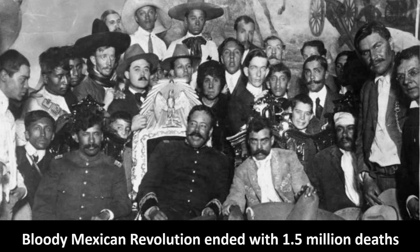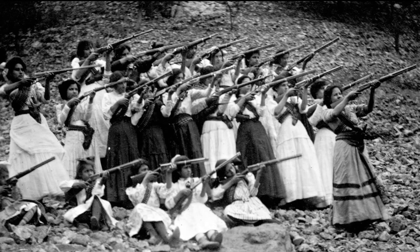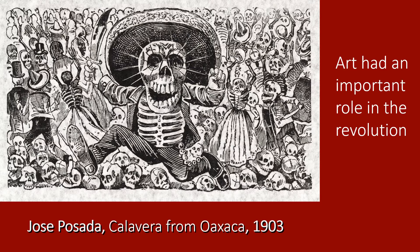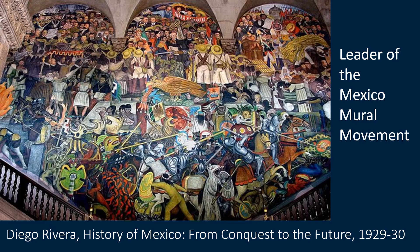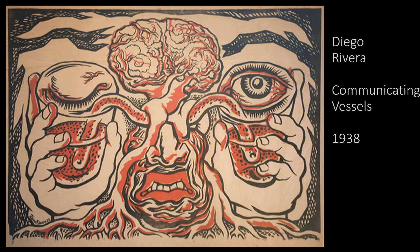Before going further, here's some background information. In the 1920s, the bloody Mexican Revolution had just ended with 1.5 million deaths. The revolution involved a peasant uprising and the new government had socialist ideals. Art had an important role in the revolution — the government wanted to use murals to communicate a socialist message. They contacted artists like Rivera to paint murals, and he eventually became the leader of the Mexican mural movement.